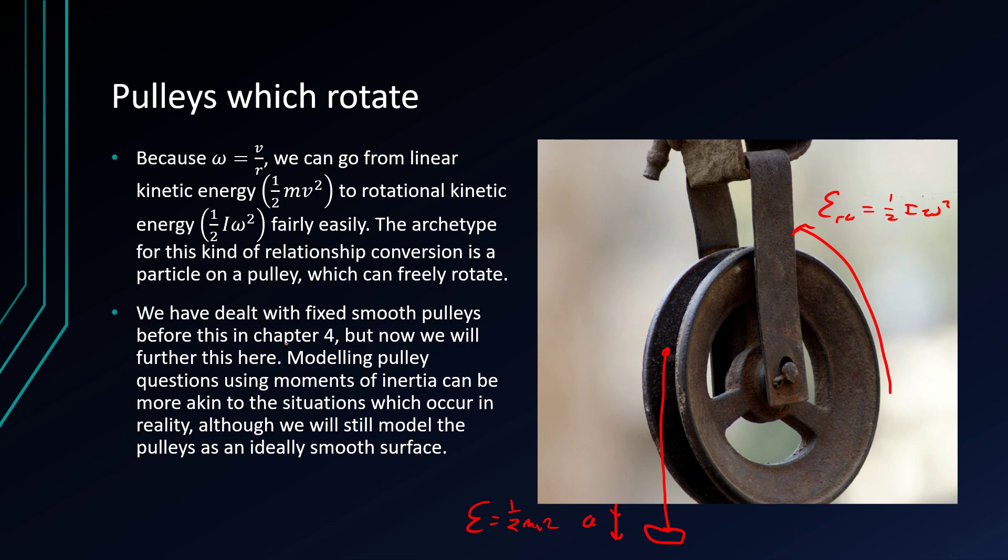So we've seen in chapter 4, or in section 4, I think it's section 5 now at this point, that pulley questions being modeled using moments of inertia actually represents the pulley more than having it as a simple fixed pulley, because pulleys aren't necessarily fixed at all times. If an old one becomes loose, for instance, it can cause an increase in acceleration, which implies an increase in both kinetic and rotational kinetic energies.